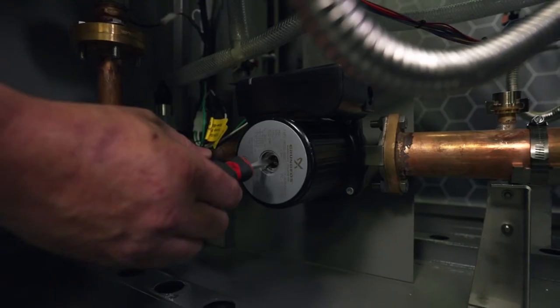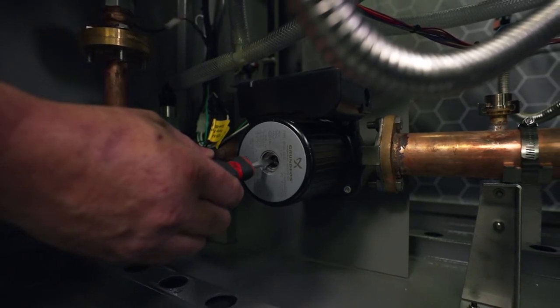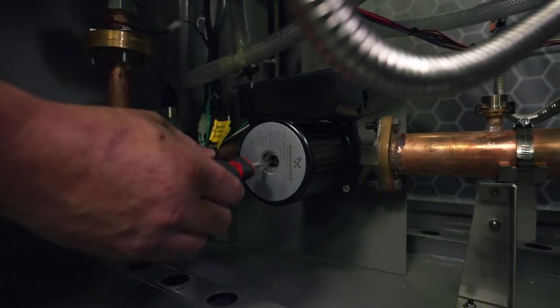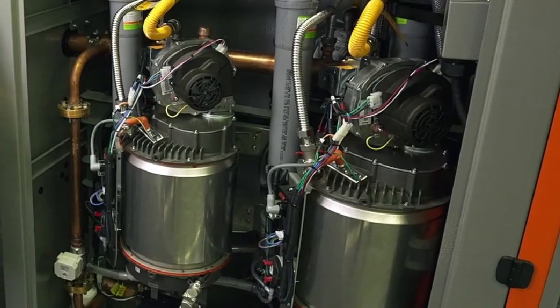Then use the flathead screwdriver to manually turn the shaft towards the direction of flow. Turn the shaft until it is easy to turn. This will unseize the pump.